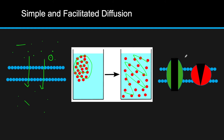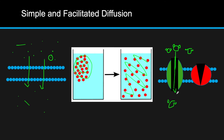This limitation can be overcome by adding proteins, giving us facilitated diffusion. There are two main types of proteins: channels, which act as a pathway, and carrier proteins, which change shape. One example of a channel is aquaporin. Since water is a polar molecule, it can't cross the plasma membrane easily, so it goes through this channel. Say there's a higher concentration of water outside and a very low concentration inside the cell — this channel protein allows water to cross because it creates an environment within the channel that allows polar molecules to pass.